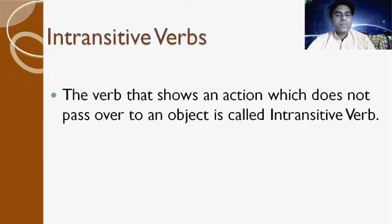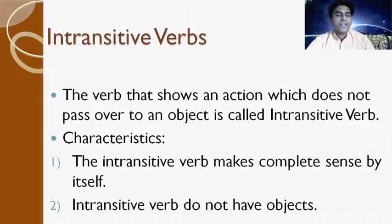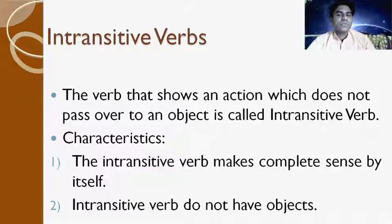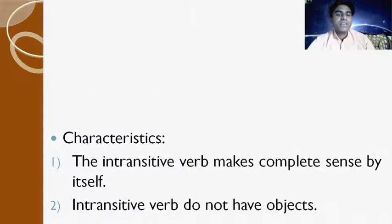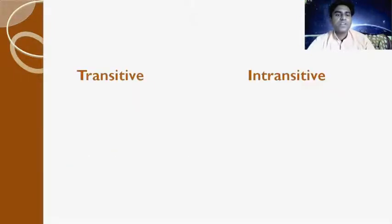The intransitive verb is a verb that shows an action which does not pass over to an object. Intransitive verbs make complete sense by themselves and do not have objects. Let's see examples of transitive and intransitive verbs to understand the difference.